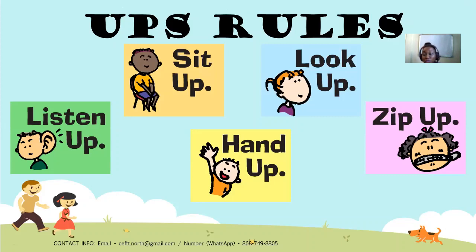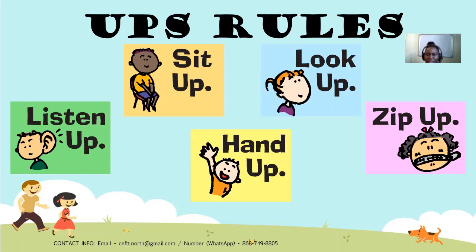CEF developed rules for the Good News Club called UPS rules — because they all have 'up' in them. It's easy for children to understand and catchy. There are five UPS rules: Sit up, Look up, Listen up, Hand up, and Zip up. Notice you won't see 'shut up' or 'hush up' — even in rules you want to avoid derogatory or insulting language. These rules are used in every face-to-face Good News Club and reviewed with children each session.